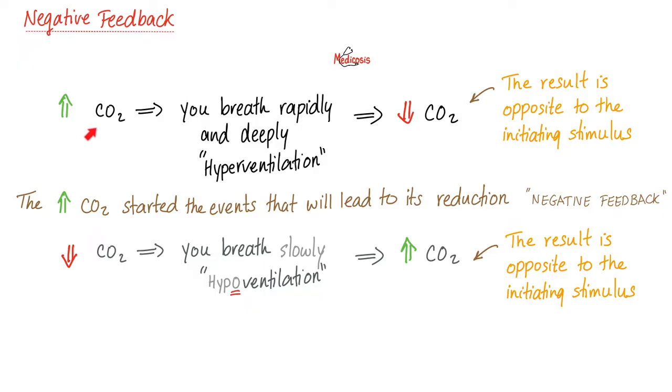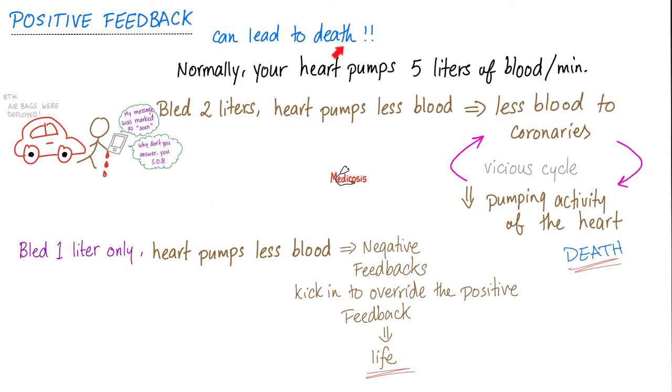Imagine this. High carbon dioxide. What should I do? I should do something to lower my carbon dioxide in the blood, such as hyperventilation. This is negative feedback, which is very common in the human body. Otherwise, I will die from too much carbon dioxide or hypercapnia.